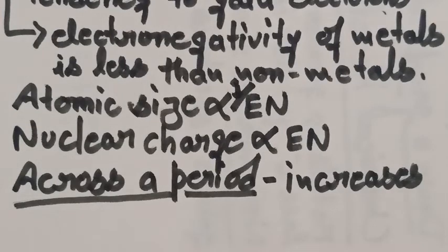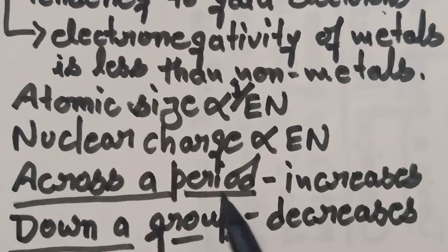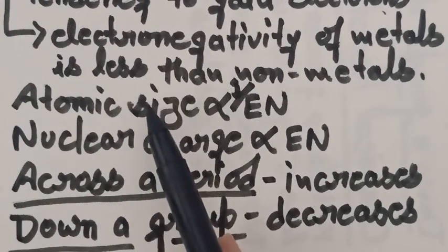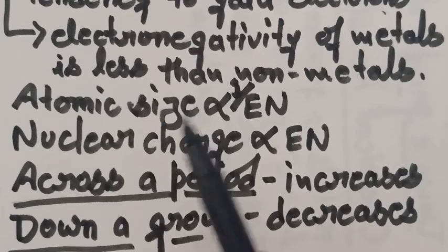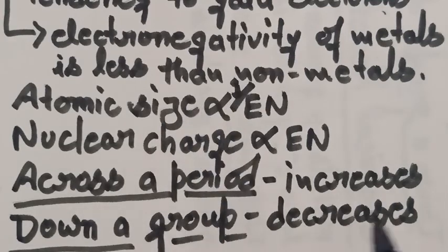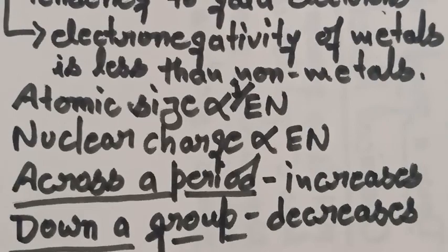Next is the trend down a group. As one moves down a group, the electronegativity decreases, because the size of the atom increases. Due to the increase in atomic size, the electronegativity decreases. I hope everything is clear up to here. Take care.